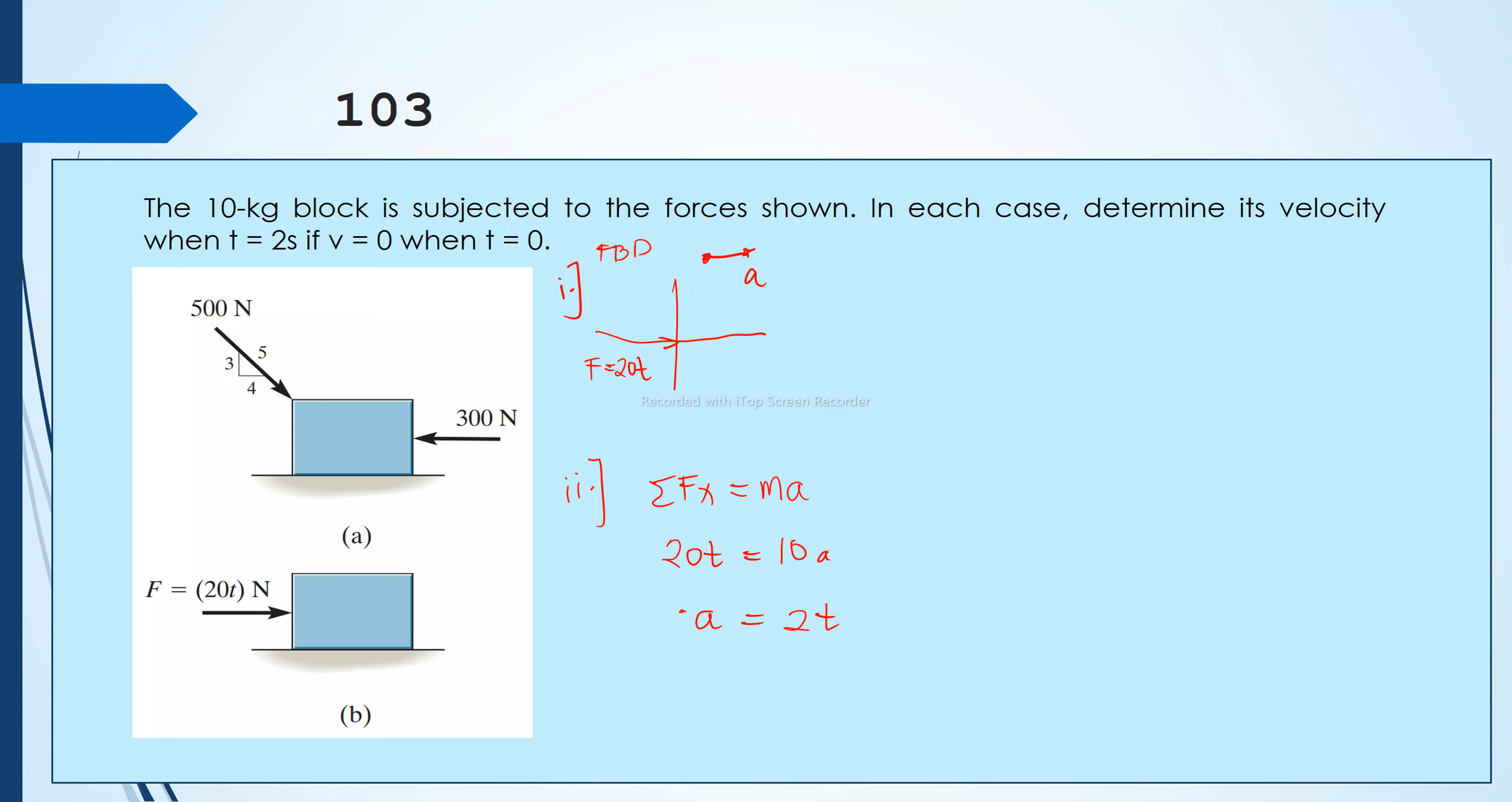So next, of course, this is very easy. Acceleration is equal to dV over dT, or dV is equal to a dT. Let me just write that one. We have dV is equal to 2T dT. Integrate the left side from the initial velocity is 0 and then we need to find the velocity at time is equal to 2 seconds. Lower limit for our time is 0, upper limit is 2 seconds.